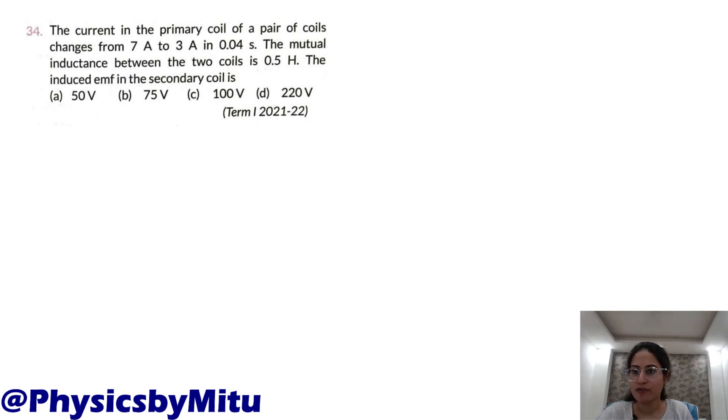The current in the primary coil of a pair of coils changes from 7 ampere to 3 ampere in 0.04 seconds. The mutual inductance between the two coils is 0.5 henry. The induced EMF in the secondary coil is?